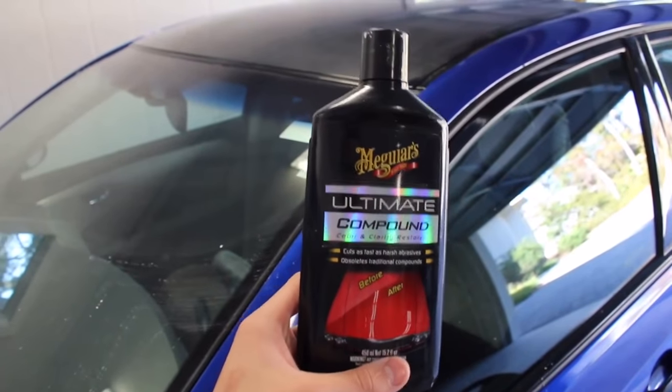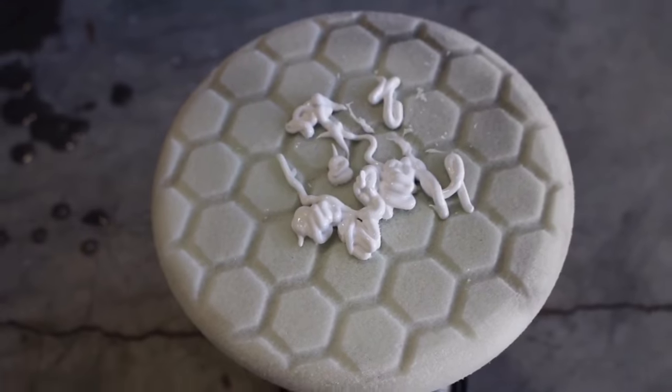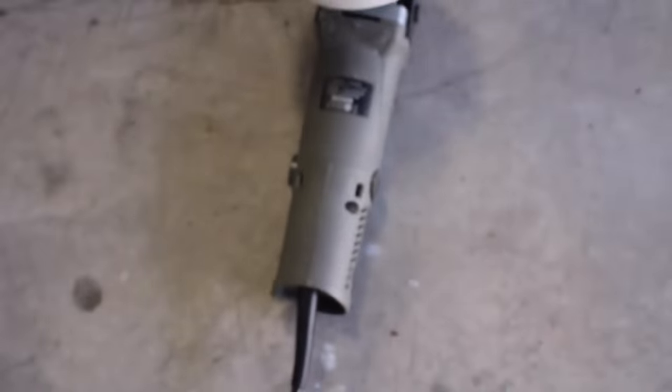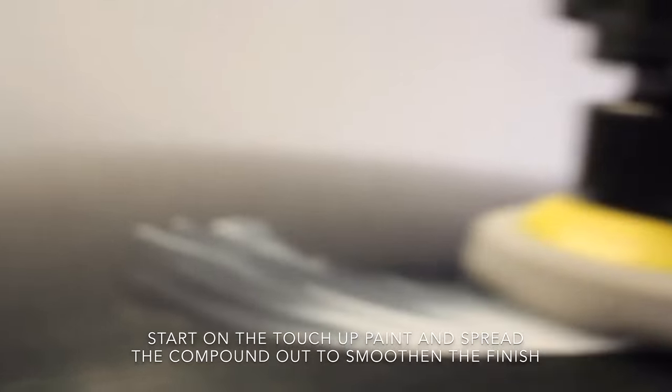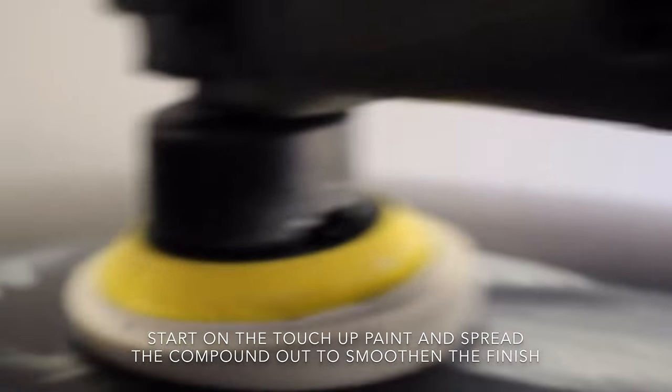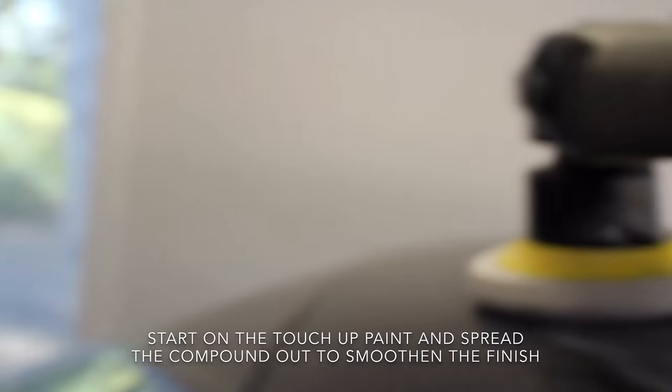I'm moving on to compounding the paint. For this step, I'm using the compound, and I have it on my machine, which is a dual-action polisher. So now, what I'm going to do is take the polisher, go onto the paint, and start spreading out the polish to get it evenly onto the finish and onto the pad.